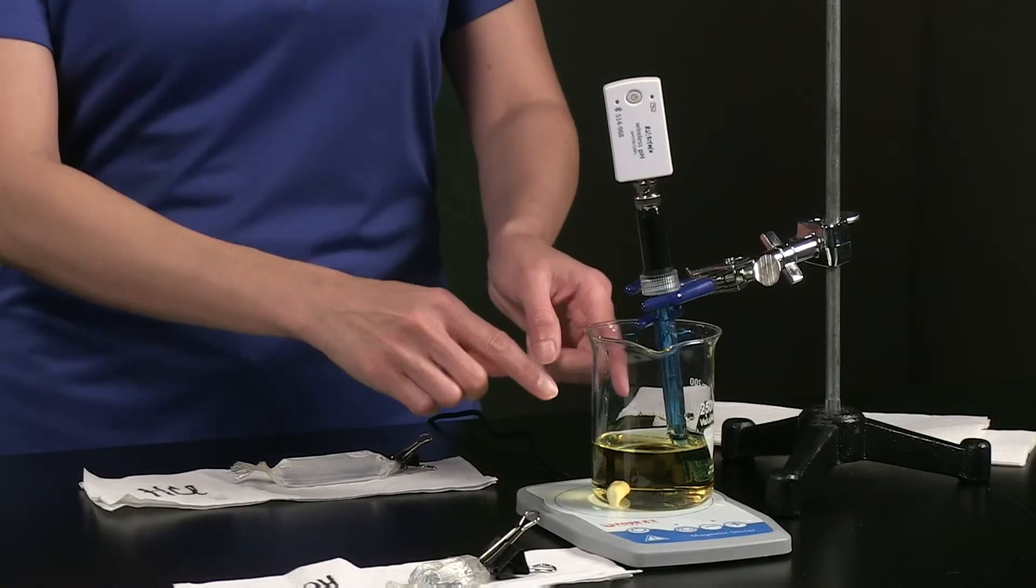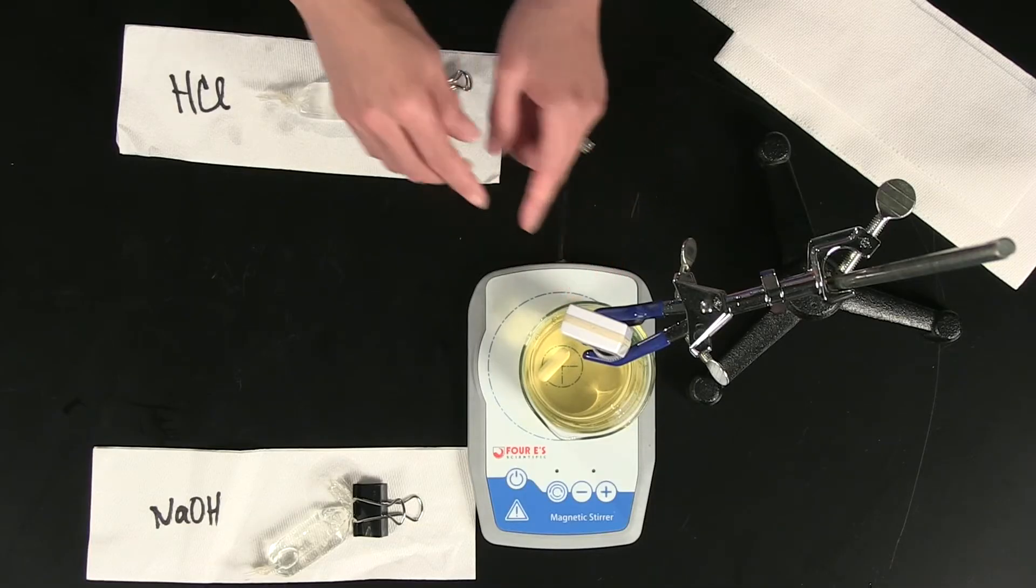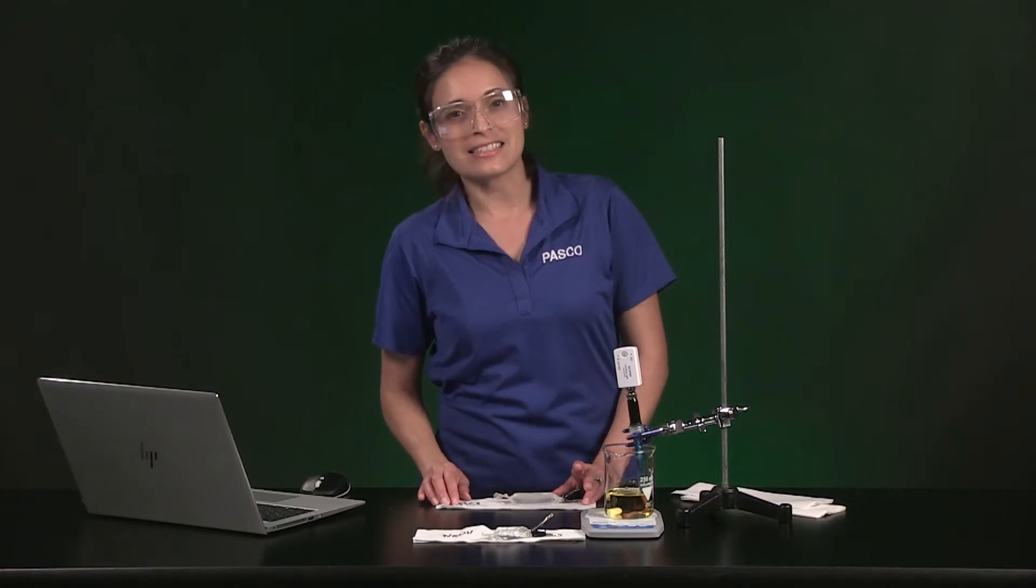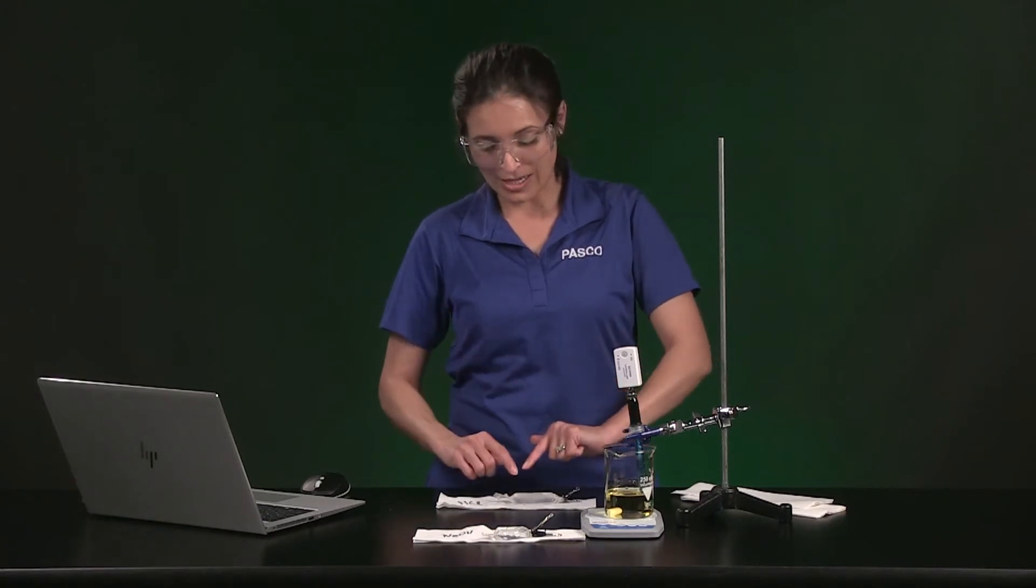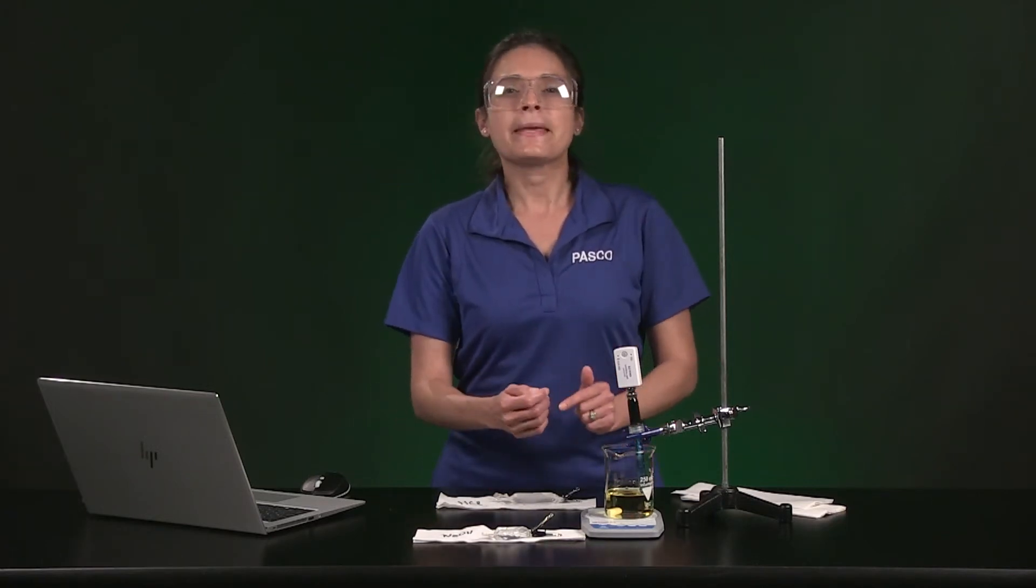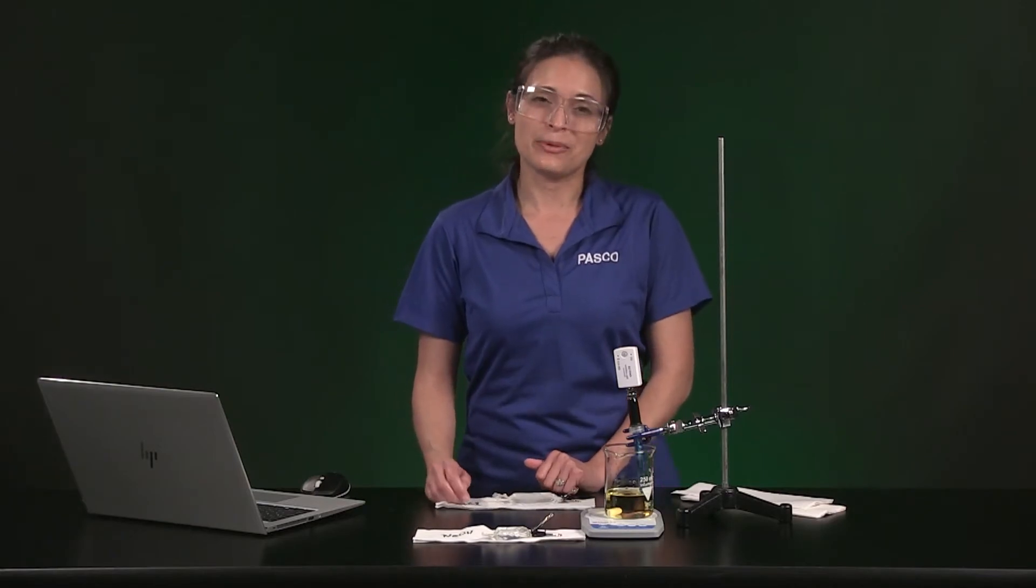We will see if either the hydrochloric acid or starch can pass through the bag into the solution in the beaker. The beaker contains an iodine solution which turns a blue-black color when it contacts starch. So we will also know if iodine is able to move from the solution into the bag or vice versa because anywhere we see a blue-black color indicates both starch and iodine are present.